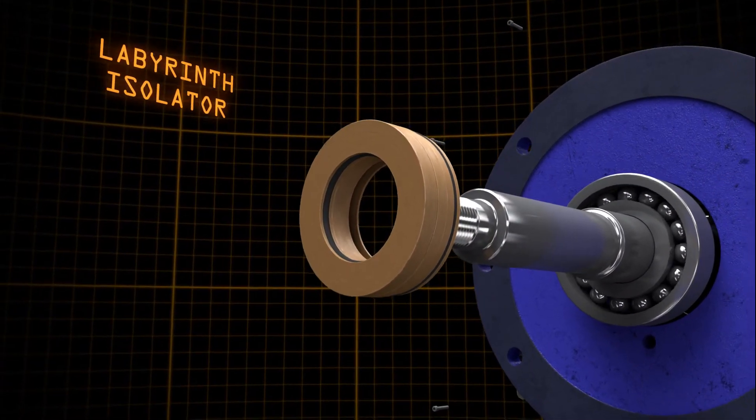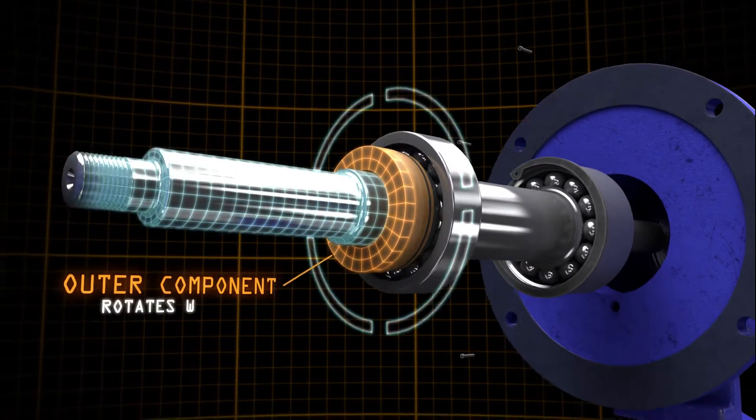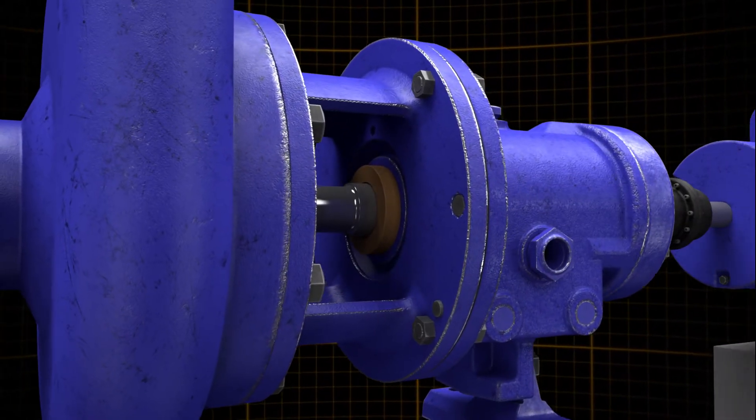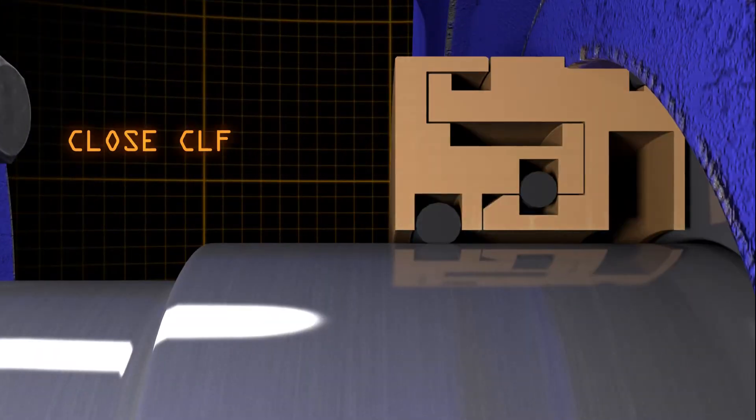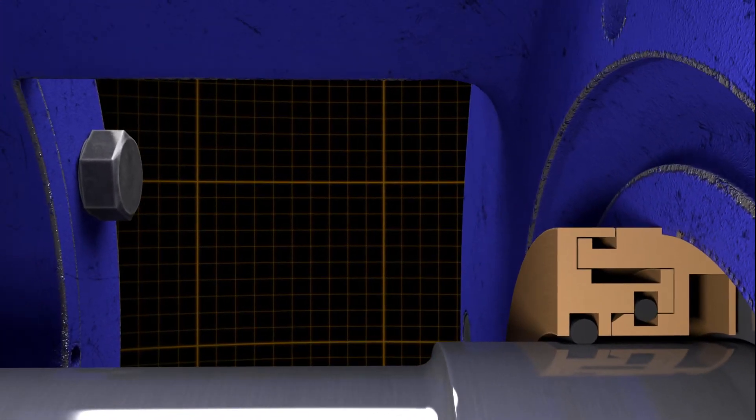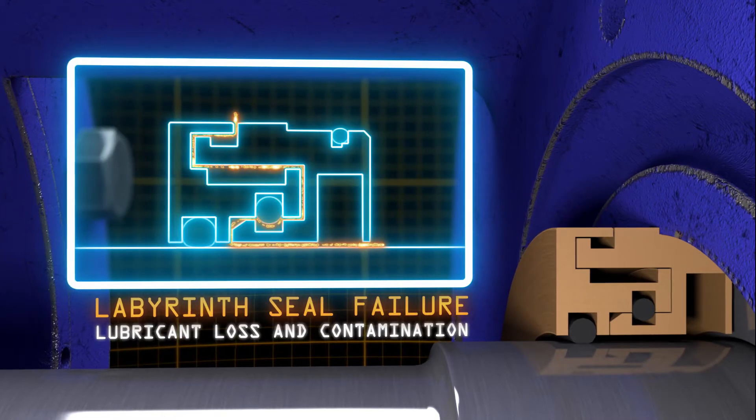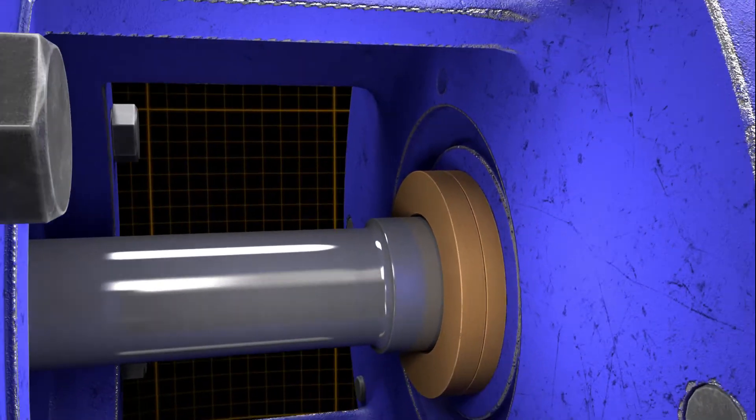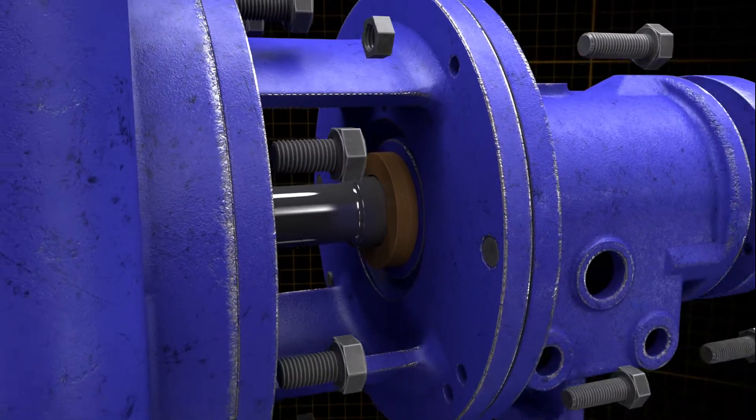Labyrinth isolators added an outer component that rotates with the shaft, solving the shaft wear issue, but replacing the positive seal with a close clearance open path. Since this open path provided a route for contaminants to enter and lubricants to escape, labyrinth seals require frequent and expensive oil changes.